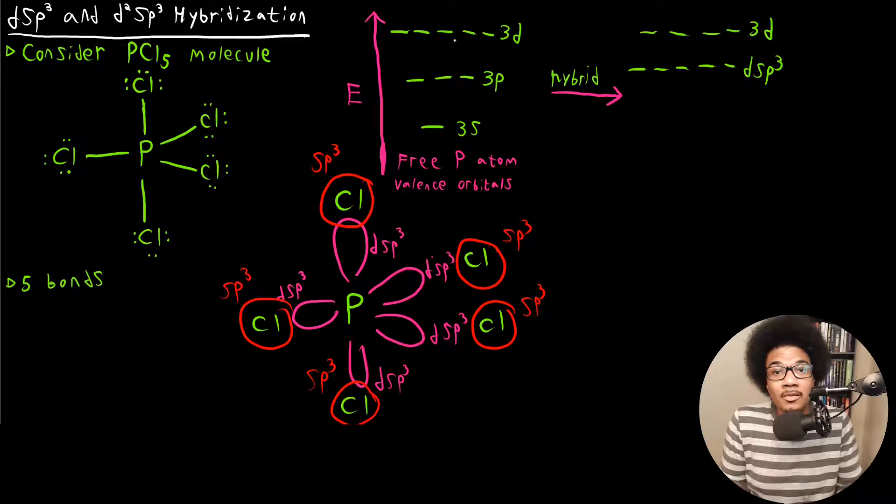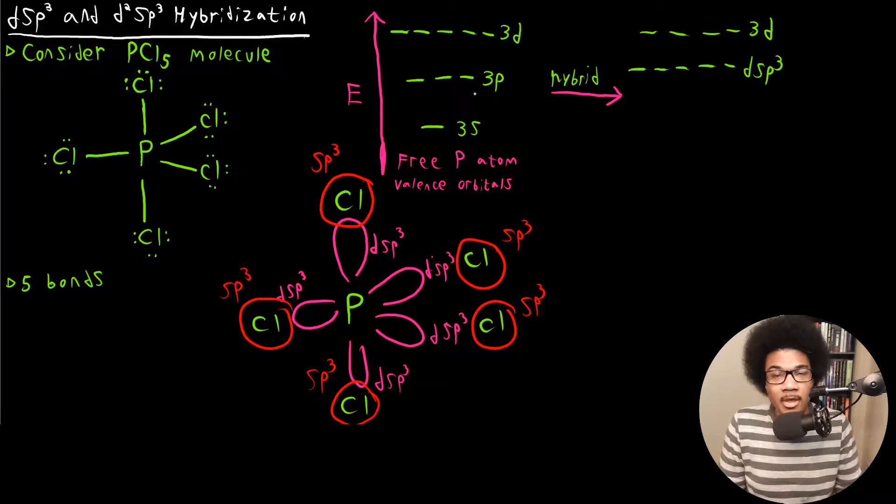And the reason they're able to do that is because this D orbital is energetically close enough to the 3P and the 3S in order to mix with them. This wouldn't happen if you're on the second row of the periodic table.